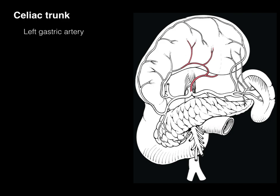The first branch is the left gastric artery. It courses along the lesser curvature of the stomach on the left side and is the smallest of the three branches from the celiac trunk. It forms an anastomosis with the right gastric artery. Both the left and right gastric arteries course within the lesser omentum along the lesser curvature of the stomach.